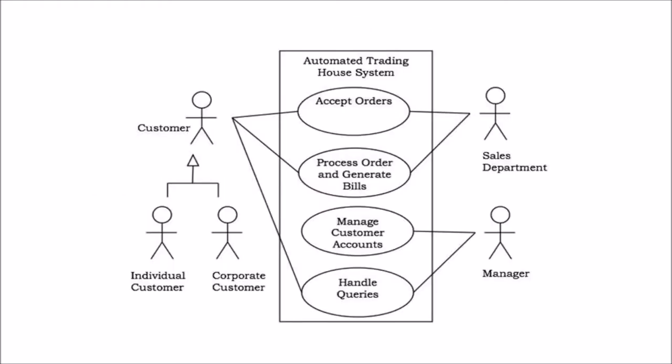If we are considering an example, let us consider an automated trading house system. We assume that the following features of the system are included: The trading house has a transaction with two types of customers, individual customer and corporate customer. Once the customer places an order, it is processed by the sales department and the customer is given the bill.